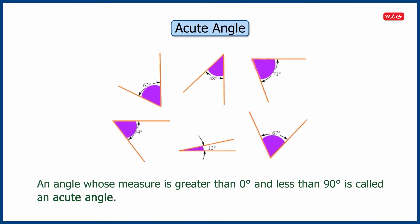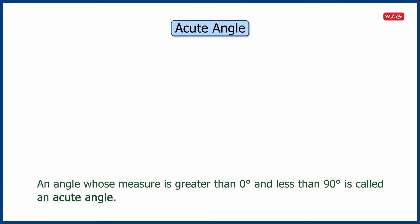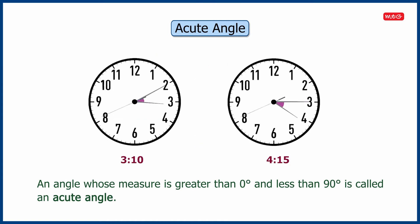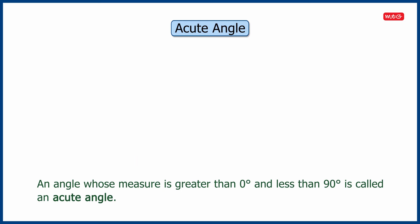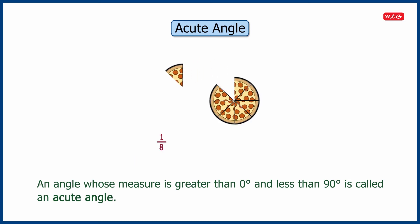All the angles shown here are acute angles. For example, clock showing 10 minutes past three, 15 minutes past three, 15 minutes past four, one by eight of a pizza, etc.